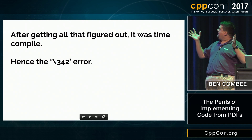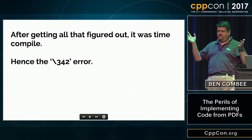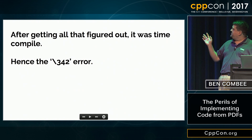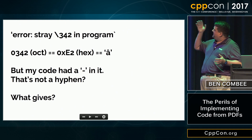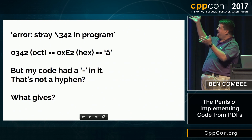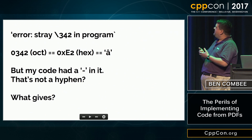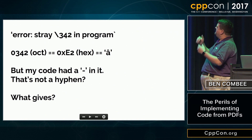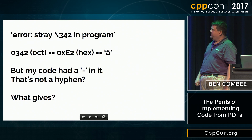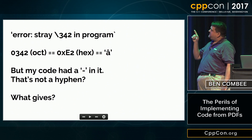So I get to this point, I compile, and I get the 342 error. Some of you might know where the punchline is here. What is this problem? 342 — that's octal. Convert that to hex, and wait — where do I get a circumflex A from? That's nowhere in the document. My code had a dash in it.